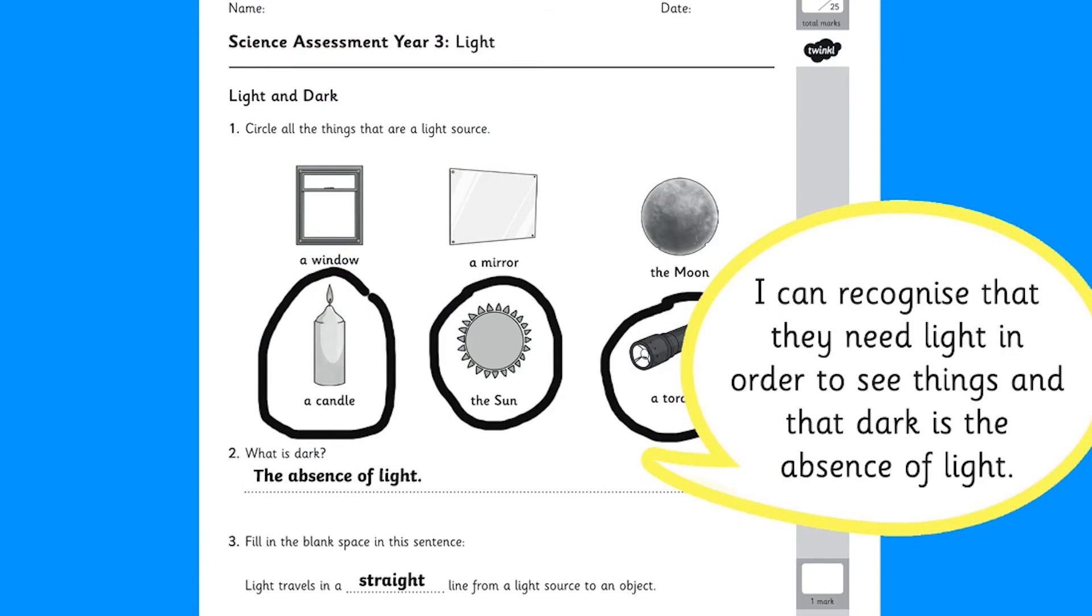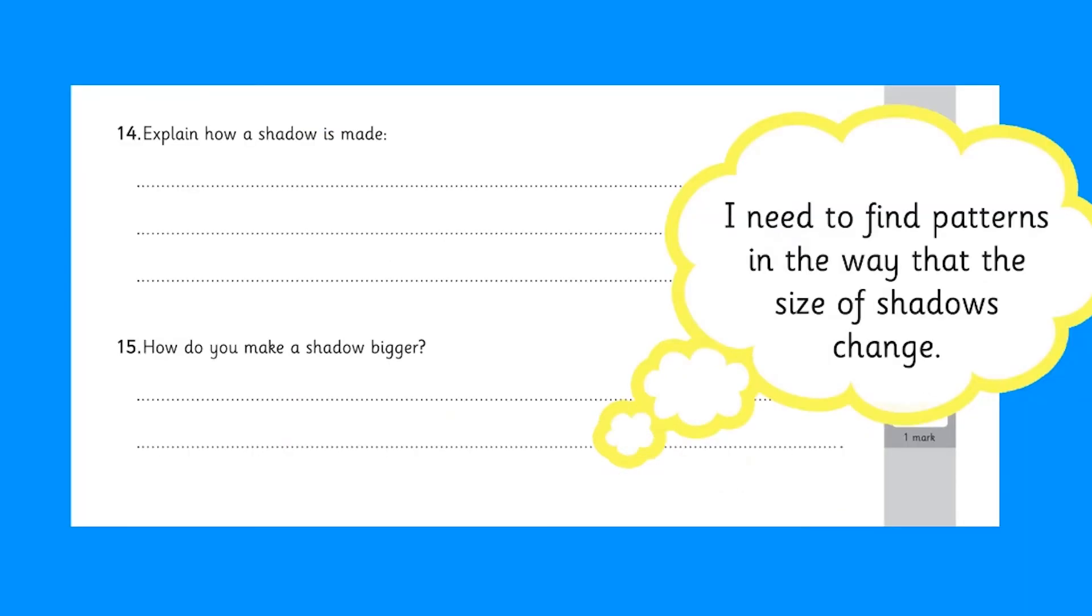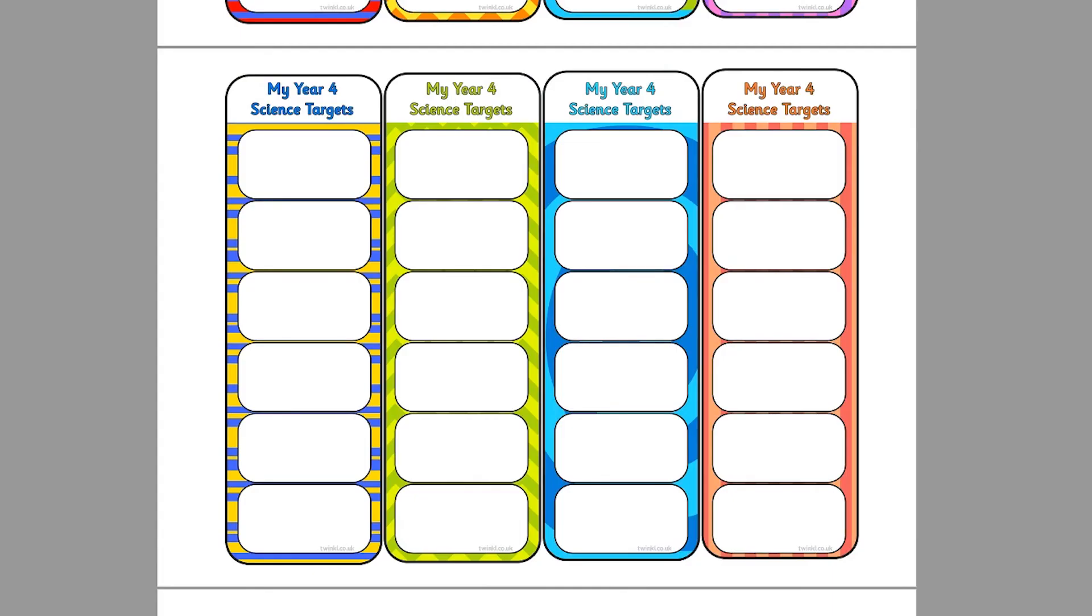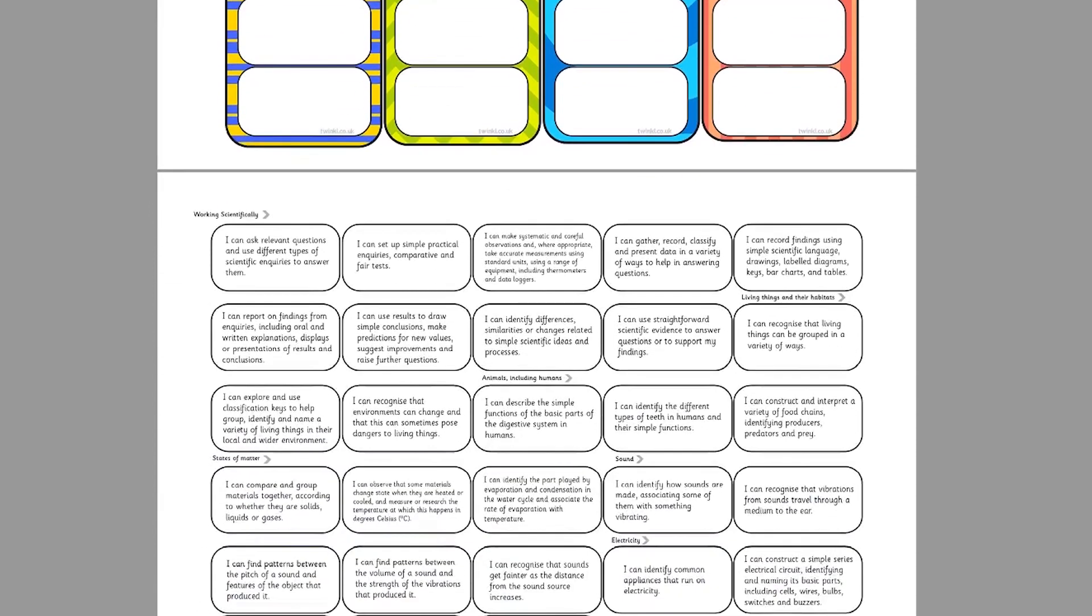They can recognise that light is needed to see but they could also reflect and realise that they need to find the pattern in the way shadow size changes. Children can use these target bookmarks as a working document that keeps track of their science understanding.